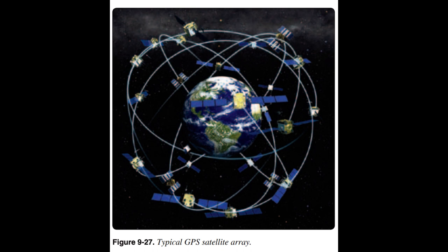Function of GPS. GPS operation is based on the concept of ranging and triangulation from a group of satellites in space that act as precise reference points. The receiver uses data from a minimum of four satellites above the mask angle — the lowest angle above the horizon at which it can use a satellite. The aircraft GPS receiver measures distance from a satellite using the travel time of a radio signal. Each satellite transmits a specific code, called a course/acquisition (C/A) code, which contains information about satellite position, the GPS system time, and the health and accuracy of the transmitted data. Knowing the speed at which the signal traveled — approximately 186,000 miles per second — and the exact broadcast time, the receiver can accurately determine aircraft position.